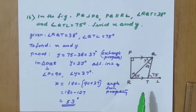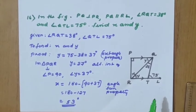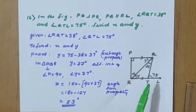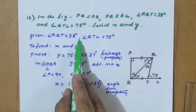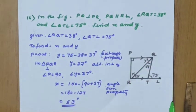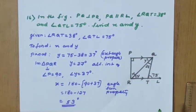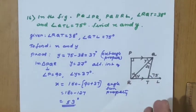Question 16: in the figure, PQ is perpendicular to PR, PQ is parallel to RL, angle RQT equals 38 degrees, and angle QTL equals 75 degrees. Find x and y. What is given: RQT equals 38 degrees and angle QTL equals 75 degrees. What is to be found: x and y.